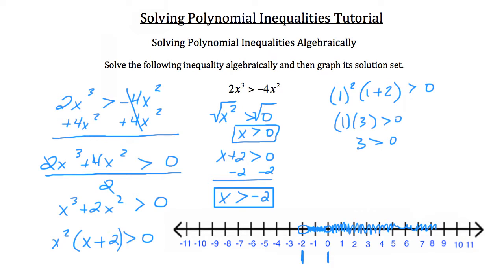So if you were to graph our inequality on a number line, it'd be everything greater than negative 2, not including 0, and everything greater than 0. Now that we've looked at solving polynomial inequalities algebraically, let's take a look at solving rational inequalities algebraically.